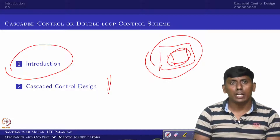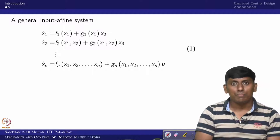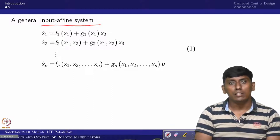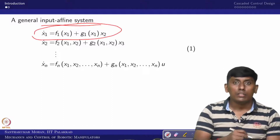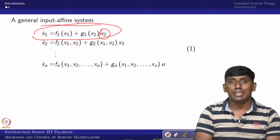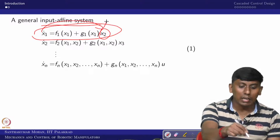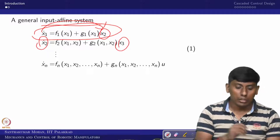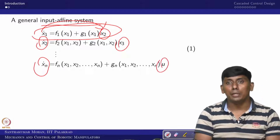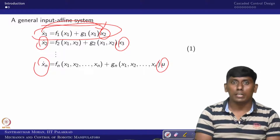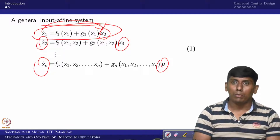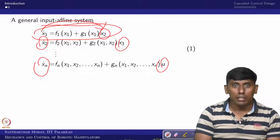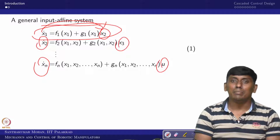One important condition is that the non-linear system should be in the form of input affine. What that means is that any subsystem you take should be assigned with one output or input. This output is affine with some input. For example, x2 dot has x3 as the independent input, and x_n dot has an independent variable u. If the system is in this form, we call it an input affine system. Fortunately, our mobile robot or manipulator has this advantage.